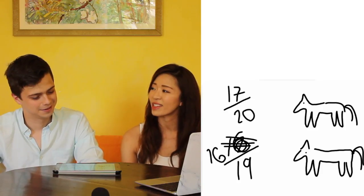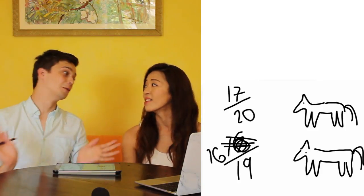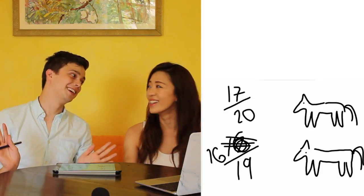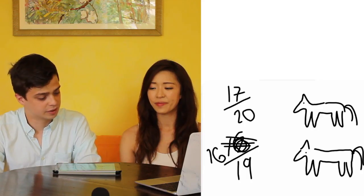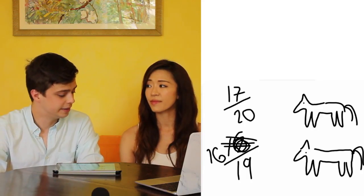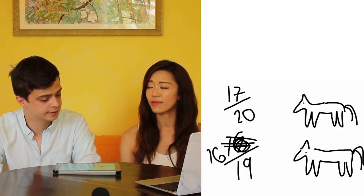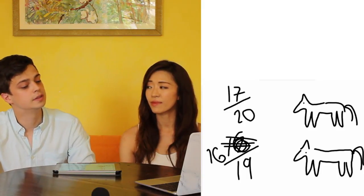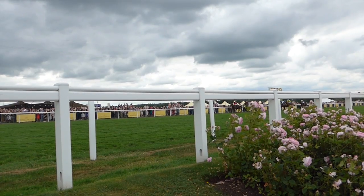We're only betting on two horses, so we only need these two fractions. Hold your horses! So what do we do with these two fractions? These two fractions depict the likelihood of each horse not coming amongst the first three.